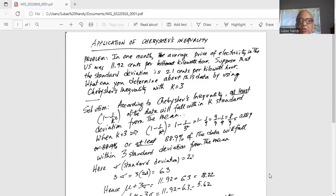According to Chebyshev's inequality, at least 1 minus 1 over k square of the data will fall within k standard deviations from the mean. When k is equal to 3,